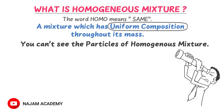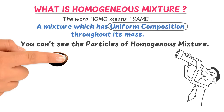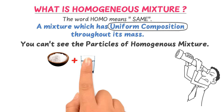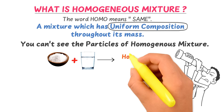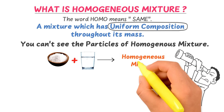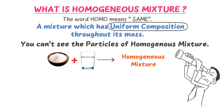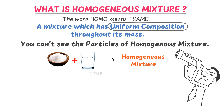The example of homogeneous mixture is when you mix table salt plus water — you get a homogeneous mixture. Remember that you cannot spot or see the particles of salt and water, and we therefore call it a homogeneous mixture.